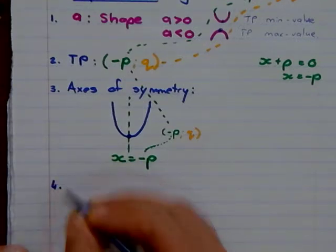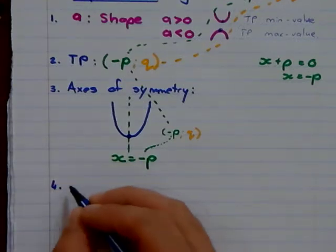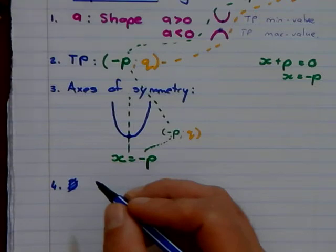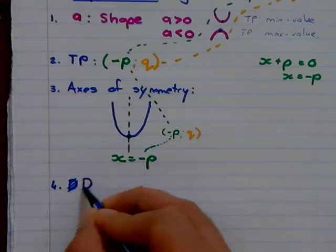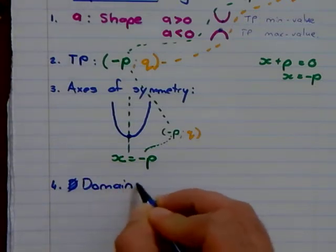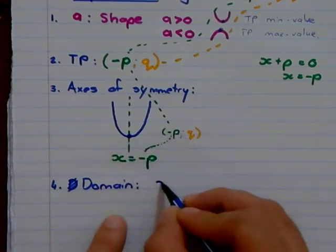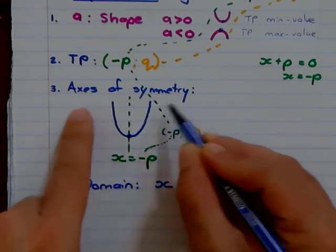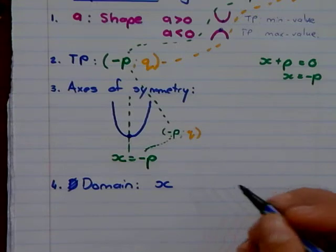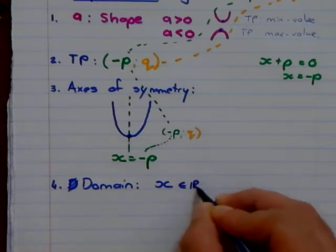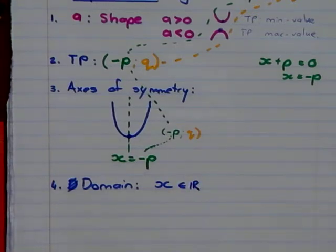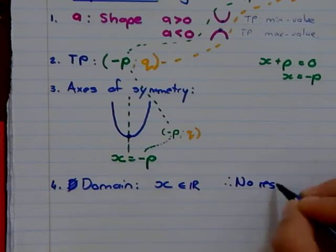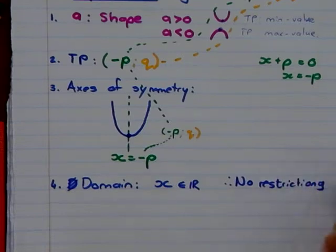Now the fourth thing we can see from this parabola or calculate is from any parabola, therefore, is the domain. My domain is to do with my x value. So if I look at my x value of any parabola, my x value is going to go greater, greater, greater. So it's infinity. Therefore, x is an element of all values, real numbers. So what can we conclude is no restrictions for my domain.